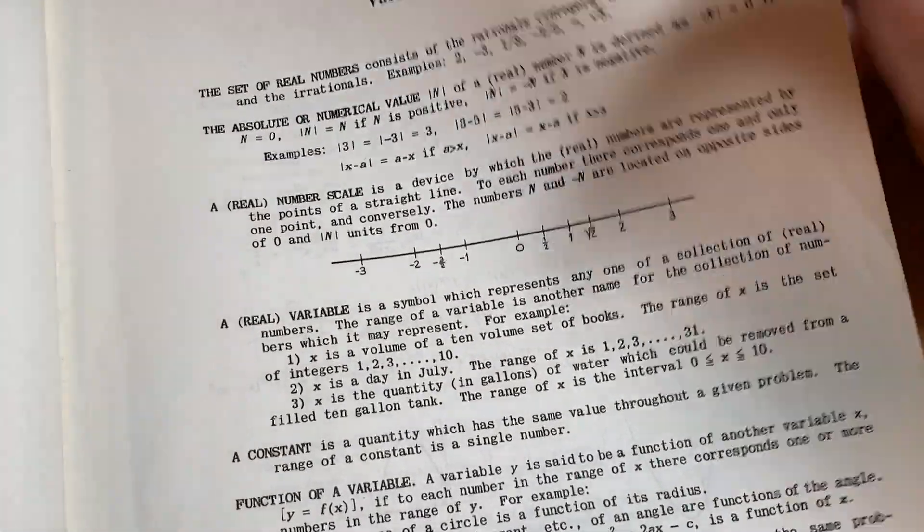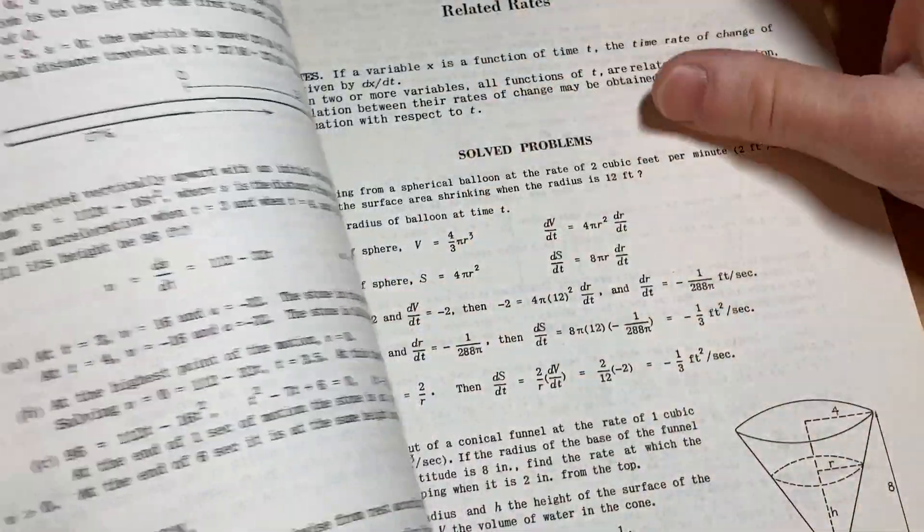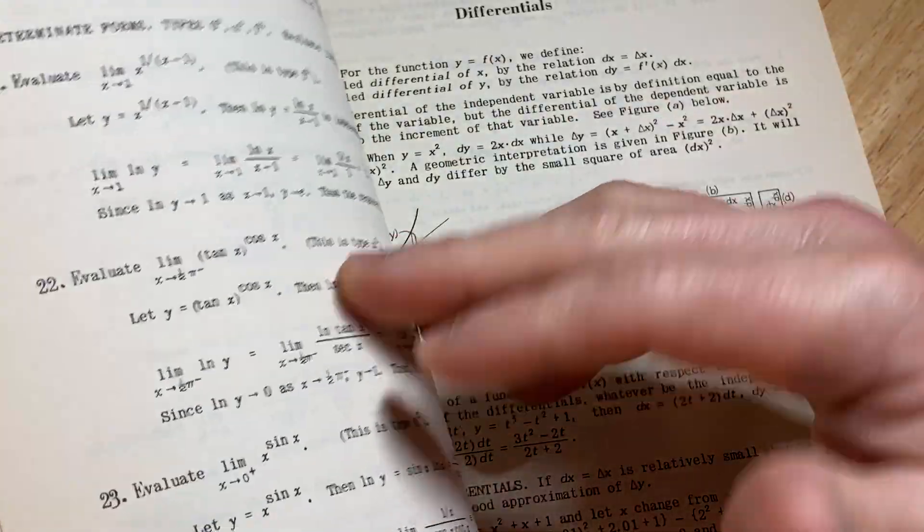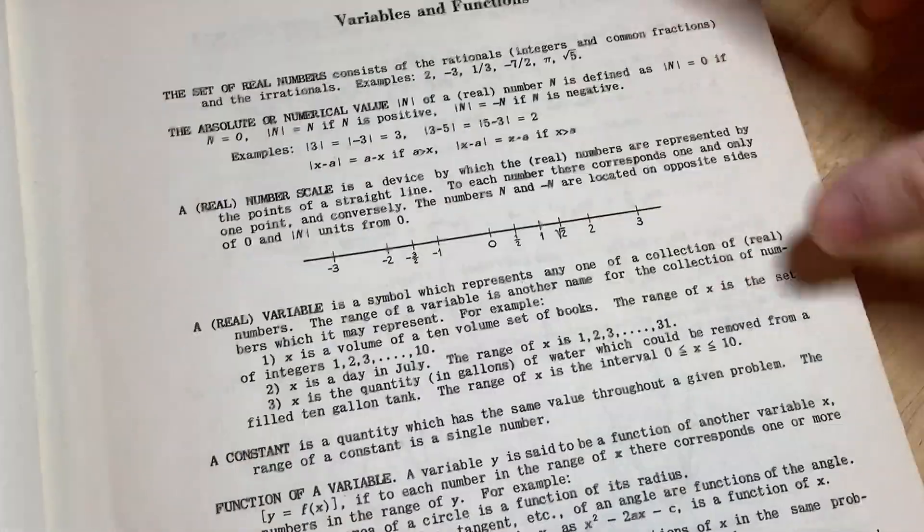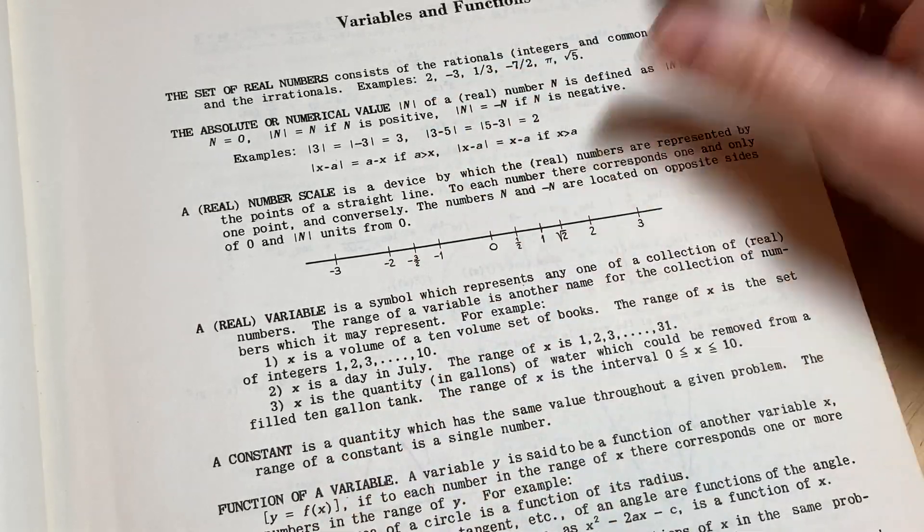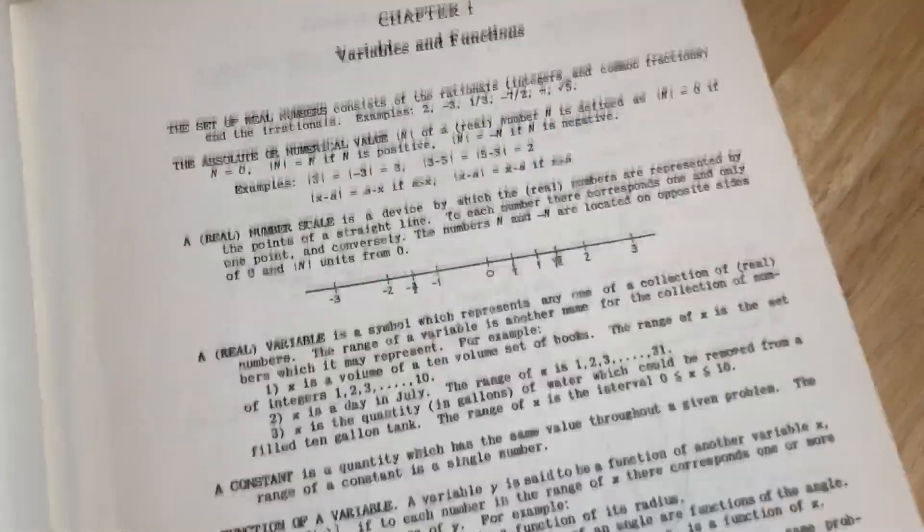And here's the book. It's really old. The typesetting is old. I don't know if you get newer editions, if the typesetting is nicer. I'll leave a link in the description in case you want to check out this book. But yeah, it's pretty cool. So really basic stuff here. The set of real numbers consists of the rationals, integers and common fractions.